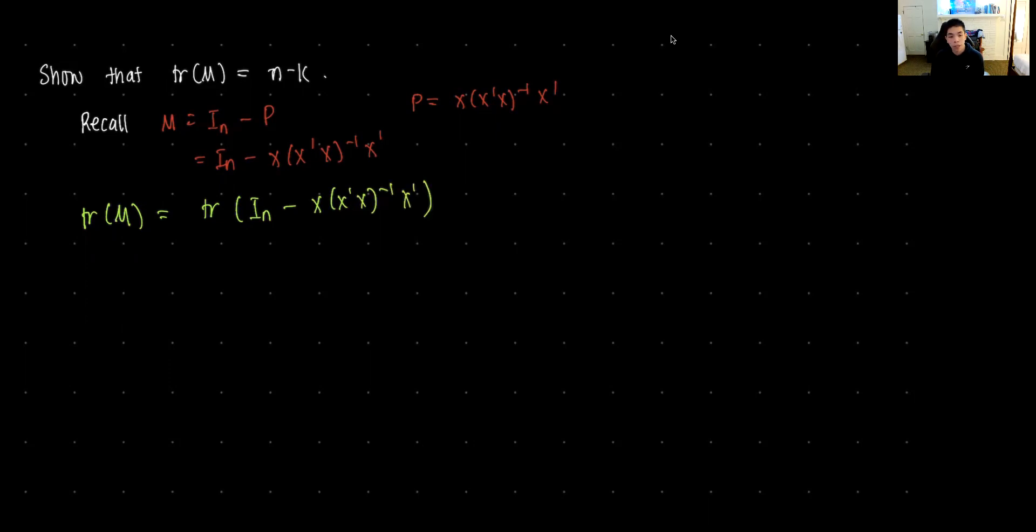And we know that by properties of the trace, if you look at the second term, we can freely rearrange that. So this is equal to trace IN minus, what I'm gonna do is I'm gonna try to force out an identity matrix here. So we get X transpose X inverse, X transpose X.